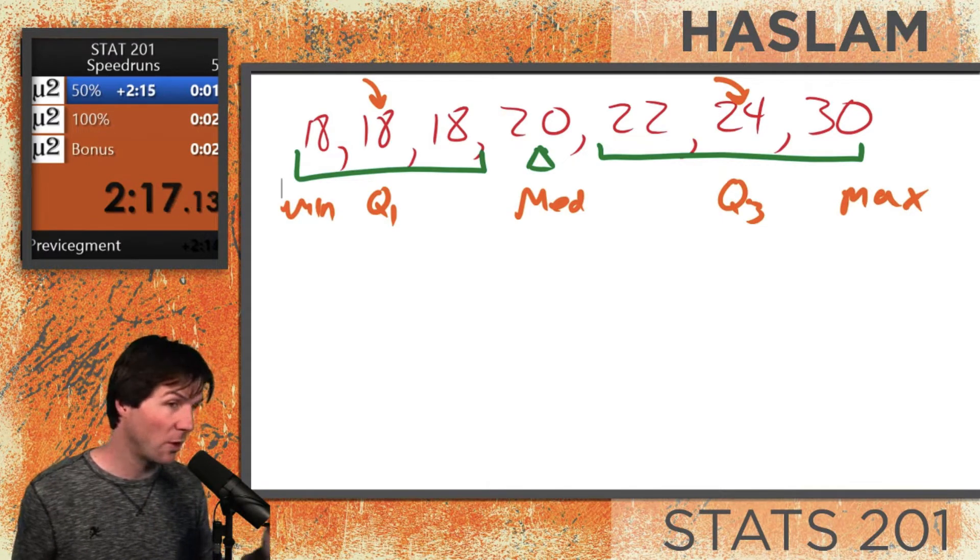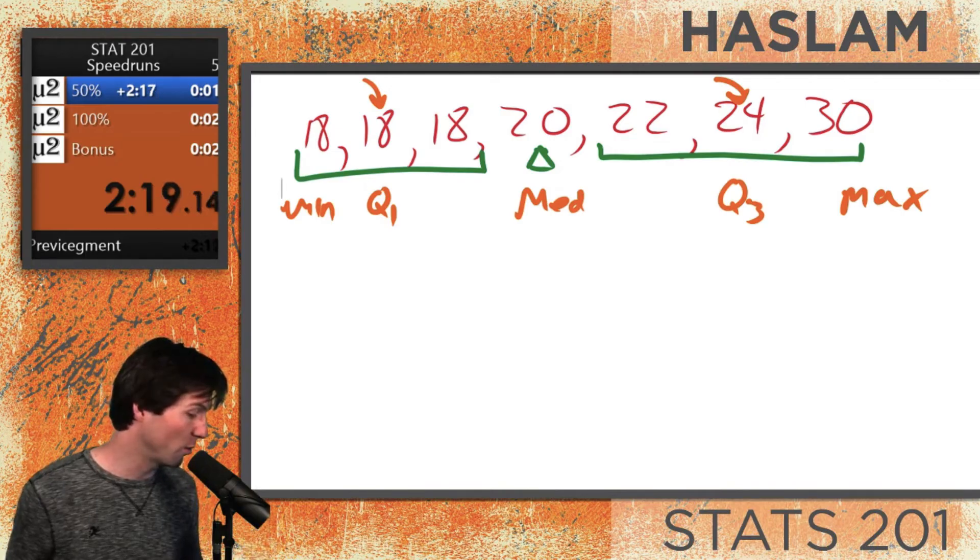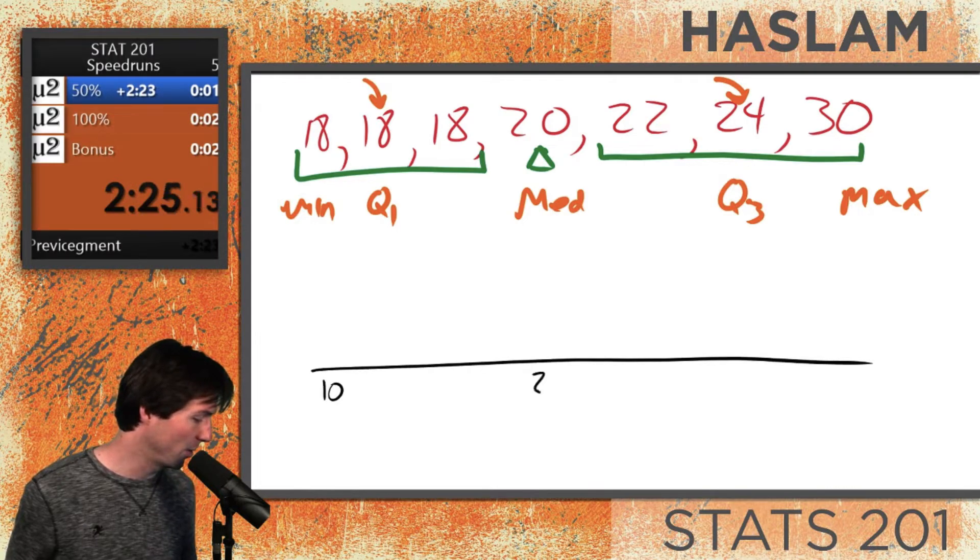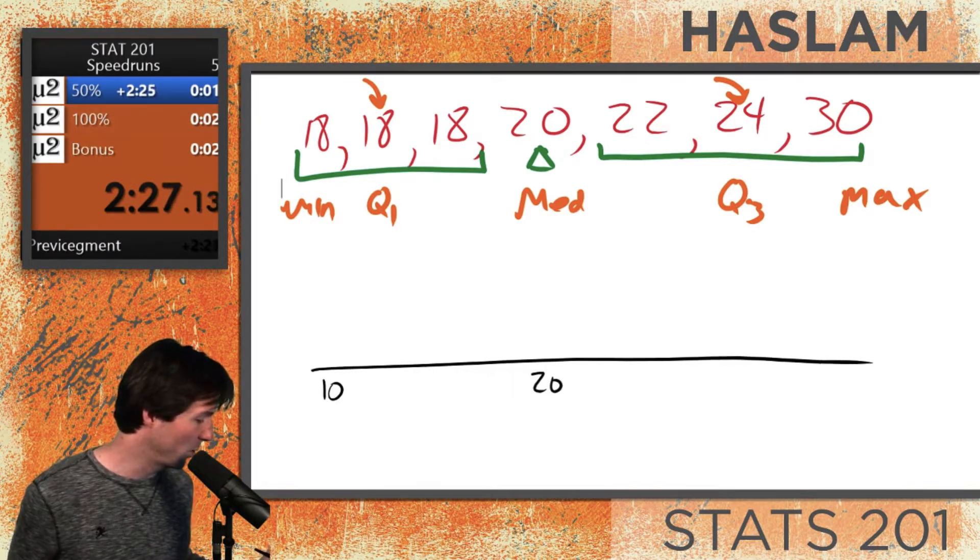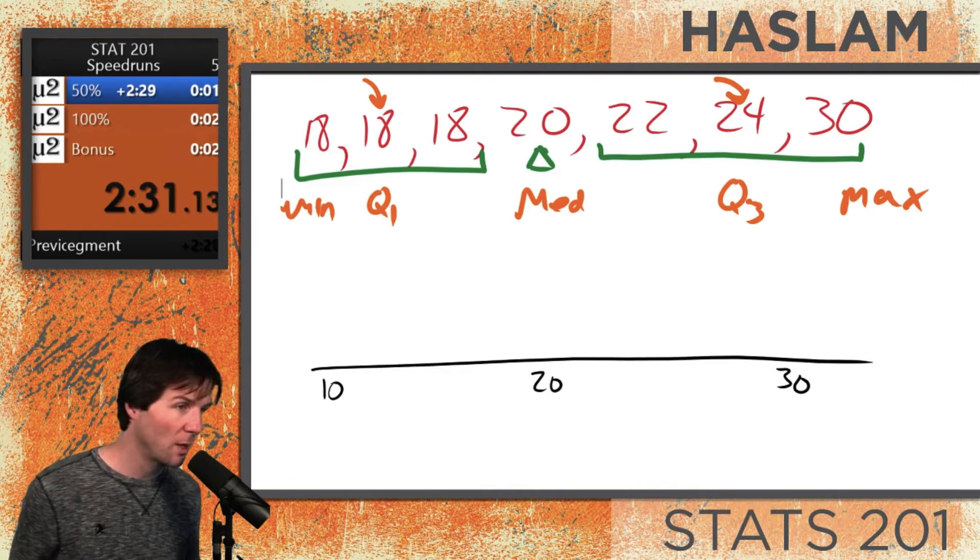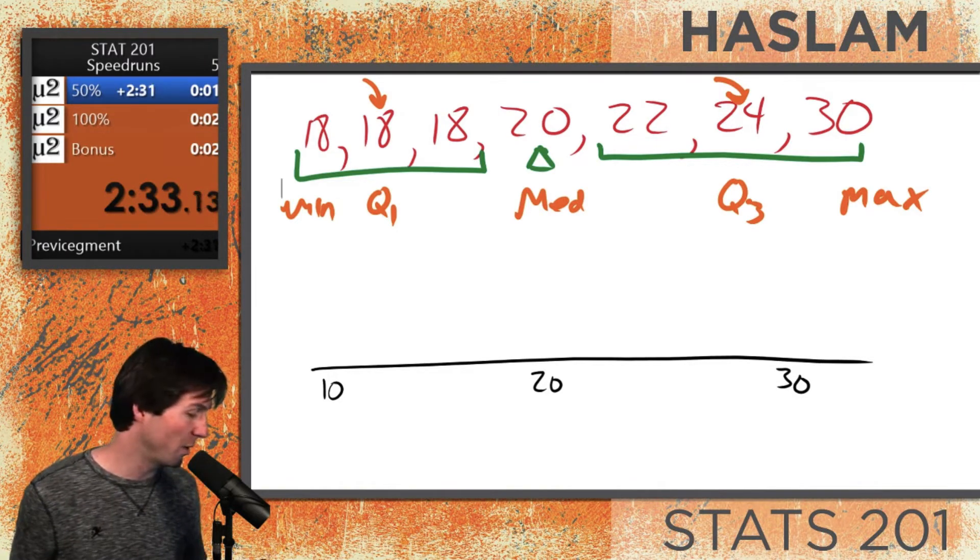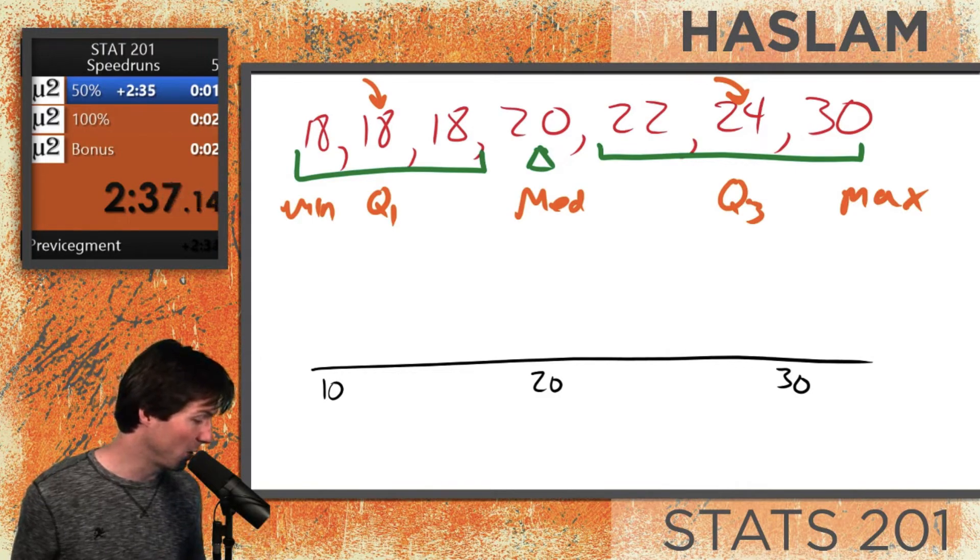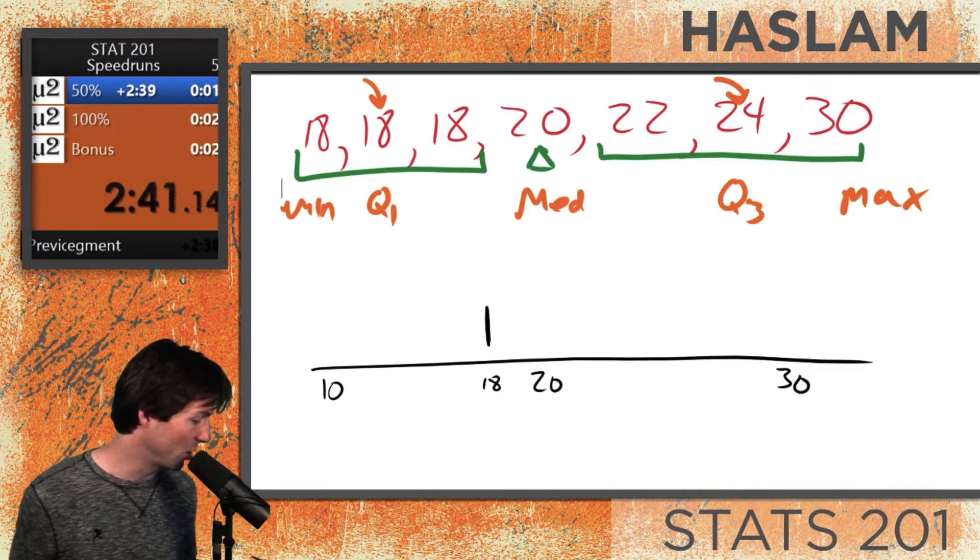From our five number summary, the first thing we will draw is the box of the box plot. Let's do a number line. We'll go here to 20 and then we'll go here to 30. We're going to draw our box. The box on the box plot needs to go from the Q1 to the Q3. I need to go here at 18 and put the start of the box, and then I need to go to Q3, which is going to be right here at 24.